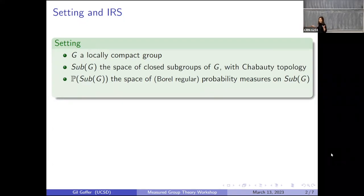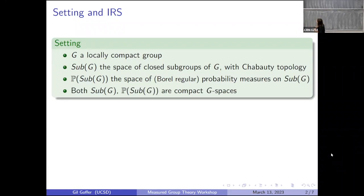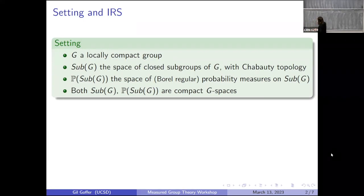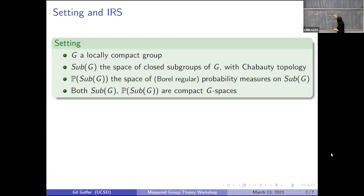Elements of Sub(G) are subgroups, and elements of P(Sub(G)) are called random subgroups — measures on subgroups. Both Sub(G) and P(Sub(G)) are compact G-spaces. G acts on itself by conjugation; the action extends to Sub(G) by conjugation, which extends to P(Sub(G)) by conjugation. Even if G is not compact, assuming G is locally compact, Sub(G) is compact and P(Sub(G)) is compact and convex.